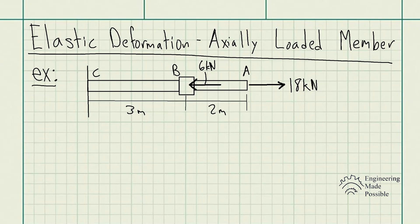Neglect the size of the connections at B and C and assume that they are rigid. We have the modulus of elasticity being 200 gigapascals for steel and the modulus of elasticity for aluminum being 70 gigapascals. As we see here, this first rod from C to B is steel material and from B to A we have aluminum, and these two rods are being connected at this coupling point B.